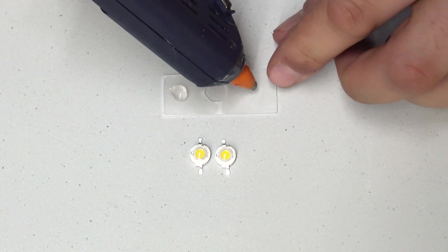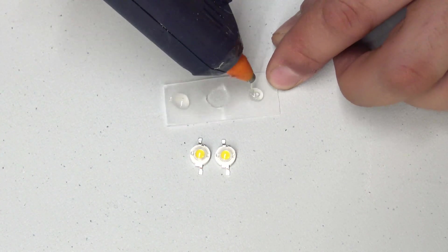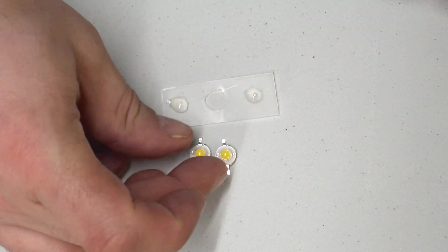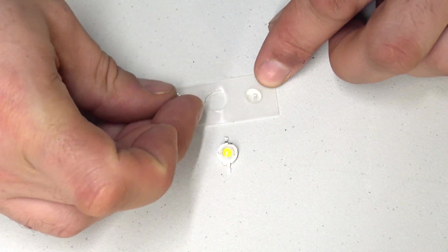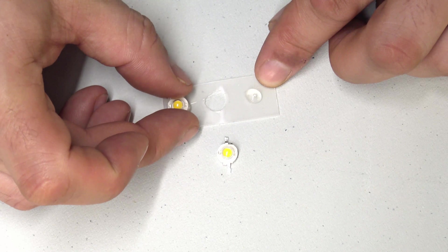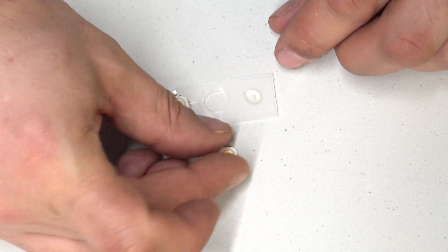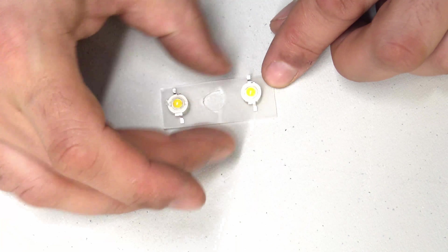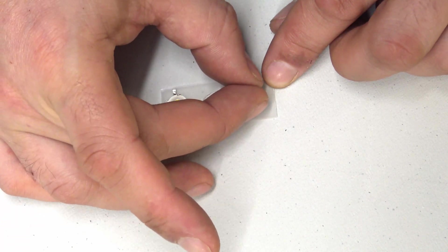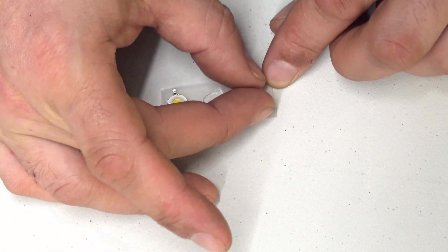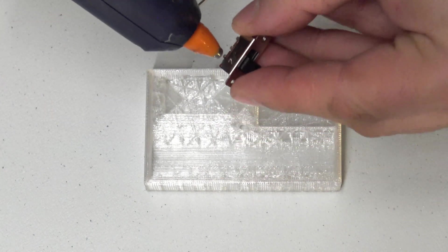Use your hot glue gun to stick those LEDs in place. The spacing is not critical. So get those bad boys glued down there on the piece of plastic and then what we're going to have to do is solder up the appropriate connectors. The LEDs will be running in parallel.